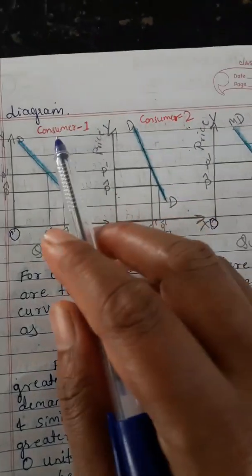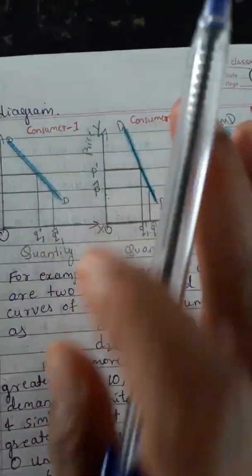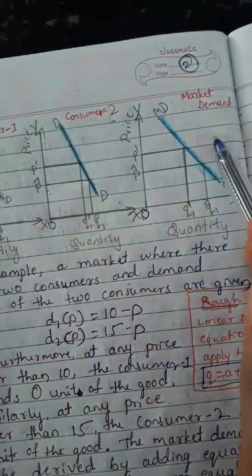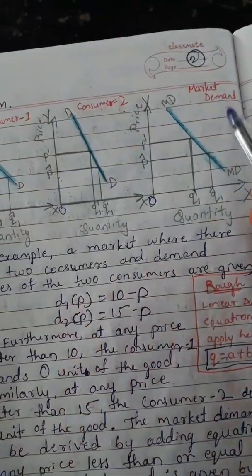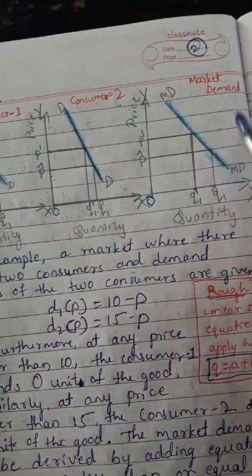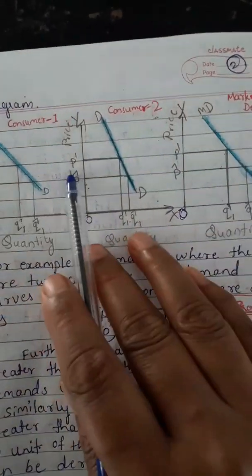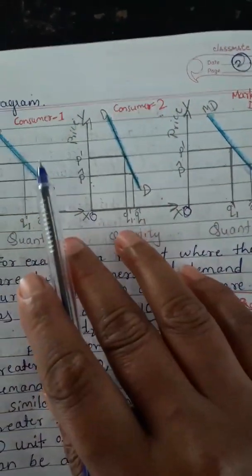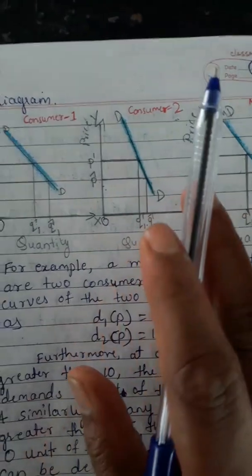It is the same for individual consumers. When individual consumers buy more in the market, the market demand also increases. If all consumers buy fewer goods, the market demand or quantity demanded in the market decreases. We assumed only two consumers here, but in the real world there are many more consumers in the market.